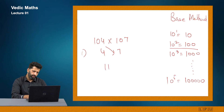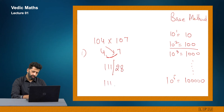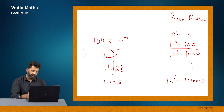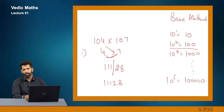The left part is 111. On the right-hand side, multiply both differences: 7 into 4 gives 28. So my answer is 11128. One important rule: the number of digits on the right-hand side must always equal the number of zeros in the base. Here the base is 100, so exactly 2 digits on the right — not more, not less. 100 is 10 raised to power 2, so number of digits here will be exactly 2.